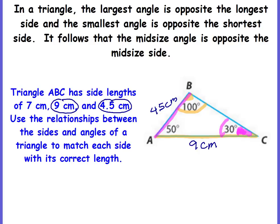It follows that the remaining ones are going to be opposite each other. Angle A is the middle or medium-size angle, and the only side that does not touch angle A is BC. So BC is the opposite side, and we go middle to middle — 7 cm.